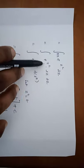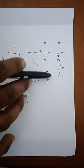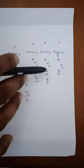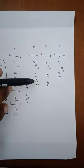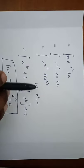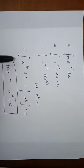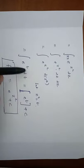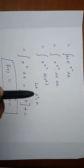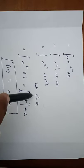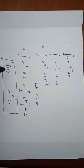To evaluate ∫2z·e^(z²) dz, note that 2z is the derivative of z². Using substitution t = z², dt = 2z dz, the integral becomes ∫e^t dt = e^t + c. Replacing t with z², we get f(z) = e^(z²) + c. Hence the analytic function is f(z) = e^(z²) + c.